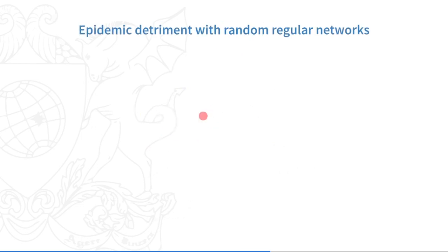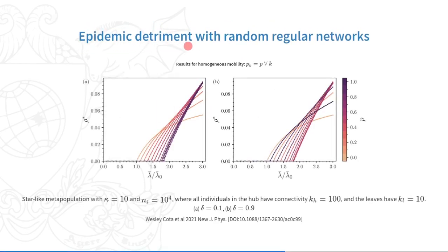It is known in the literature that mobility can be detrimental to the spread of disease, increasing the epidemic threshold. Here, we also find the epidemic detriment, even when assuming a uniform but different connectivity inside each patch. The epidemic threshold increases with the mobility parameter p, that is assumed to be the same for any connectivity k.